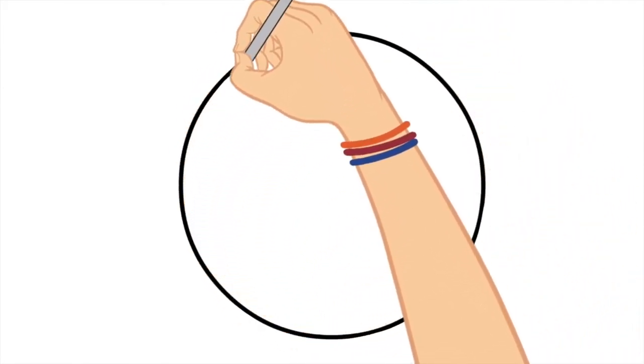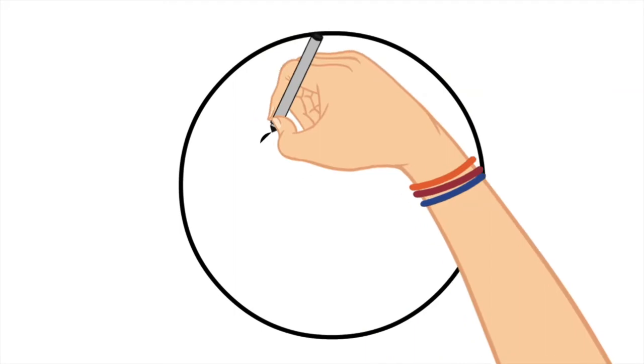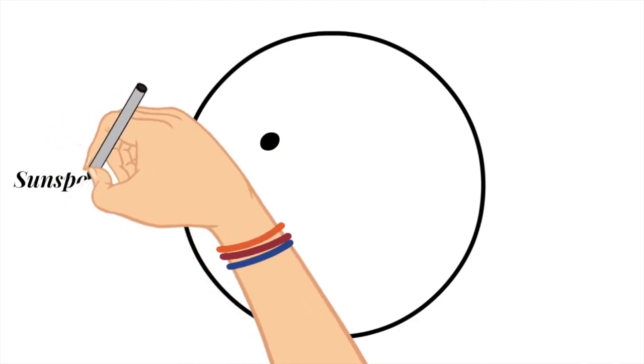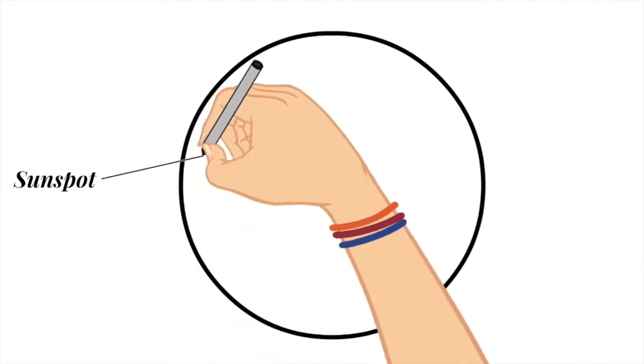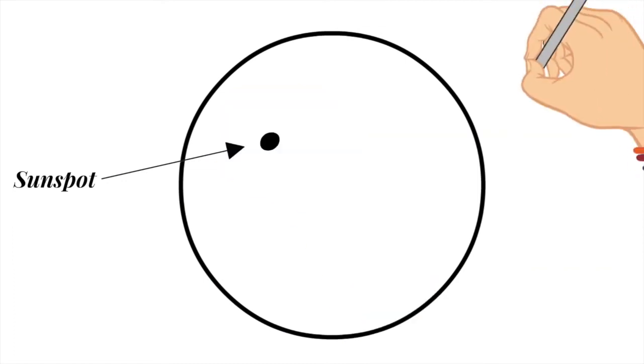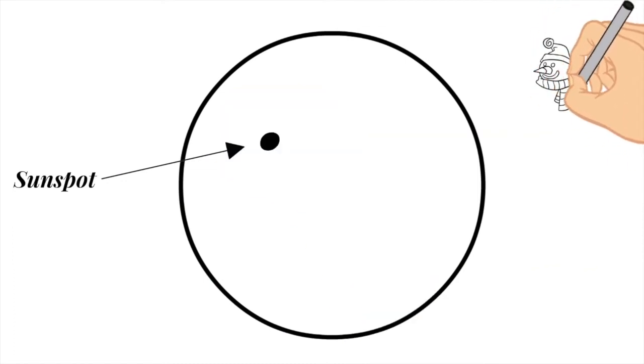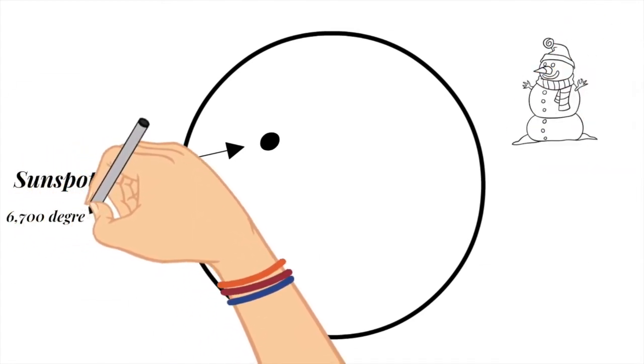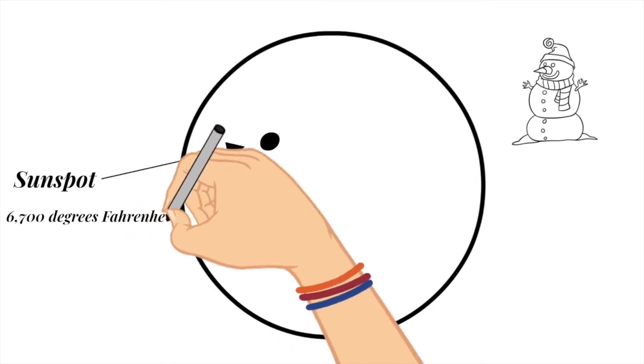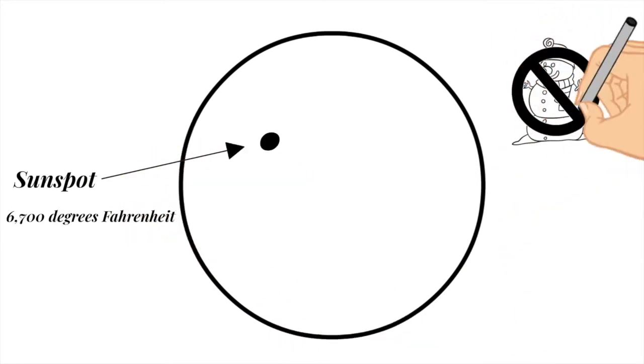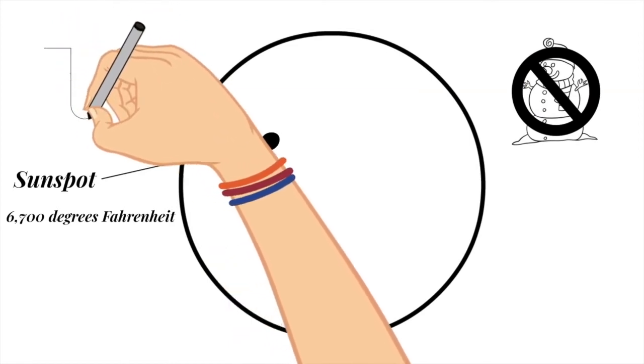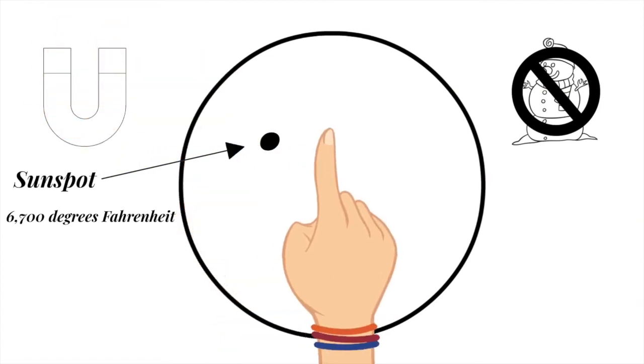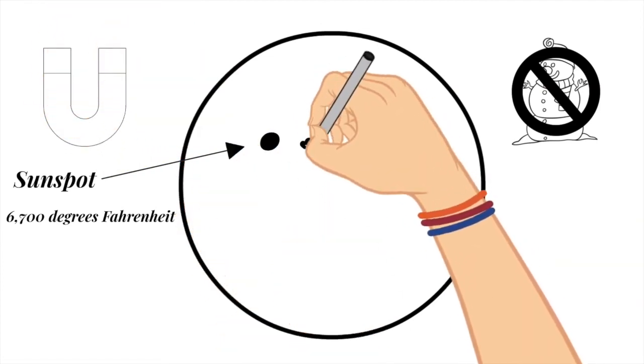Next, we are going to talk about sunspots and solar flares. Sunspots are areas that appear dark on the surface of the sun. They appear dark because they are cooler than other parts of the sun's surface. Now, when I say cooler, I don't mean cold. They are still around 6,700 degrees Fahrenheit, so don't break out your parkas yet. This is due to magnetic flux that inhibits the convection that we were just talking about.